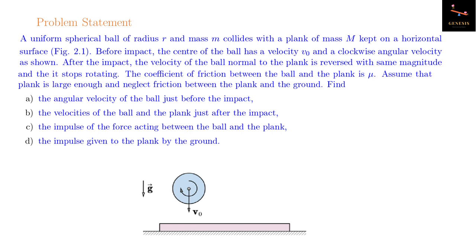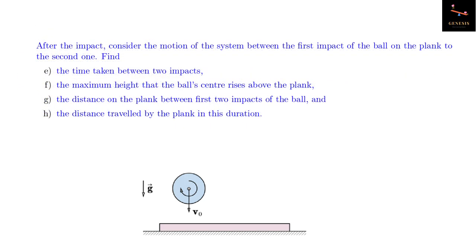Part B: the velocities of the ball and the plank just after the impact. Part C: the impulse of the force acting between the ball and the plank. Part D: the impulse given to the plank by the ground. After the impact, consider the motion of the system between the first impact of the ball on the plank to the second one. Find part E: the time taken between two impacts. Part F: the maximum height that the ball center rises above the plank. Part G: the distance on the plank between the first two impacts of the ball, and H: the distance traveled by the plank in this duration.